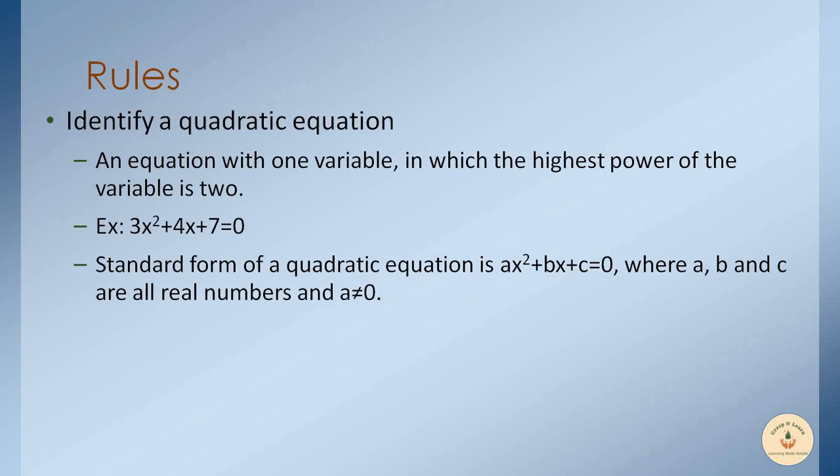We have three constants a, b, and c and only one variable x. For a quadratic equation it is compulsory that the coefficient of x² cannot be 0, so a cannot equal 0, and all of a, b, and c are real numbers.